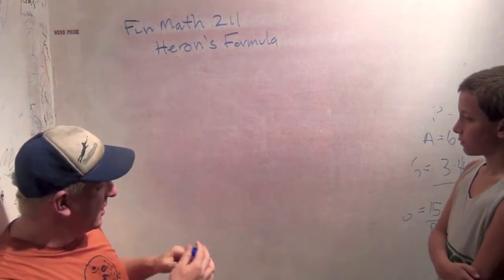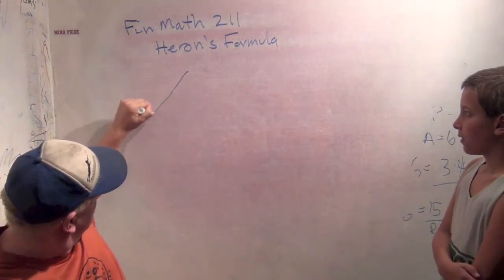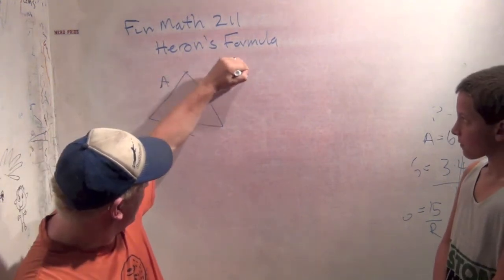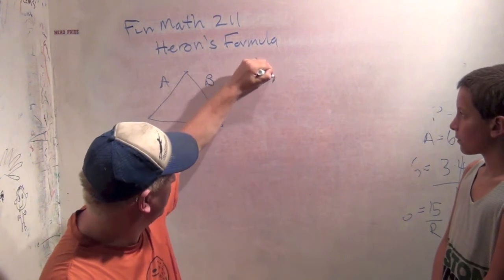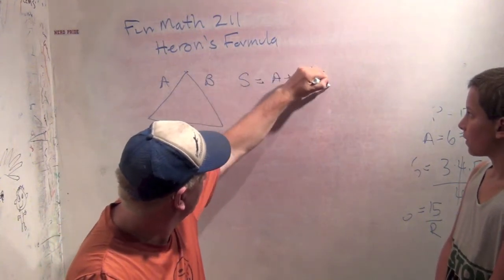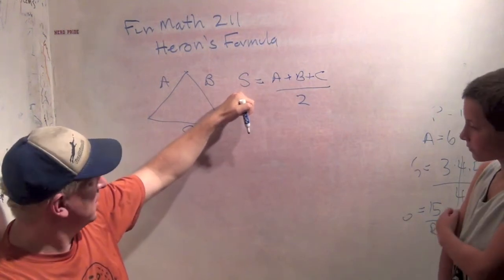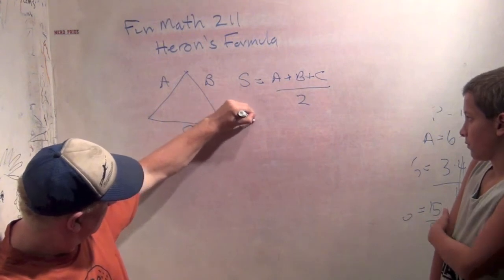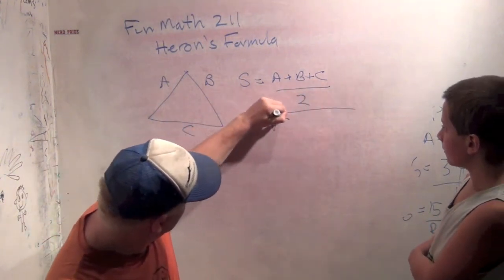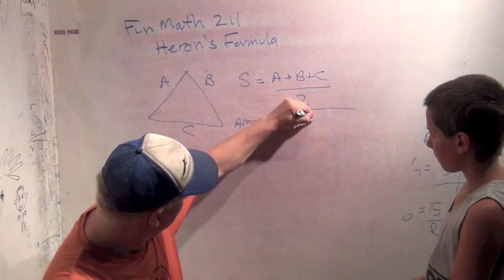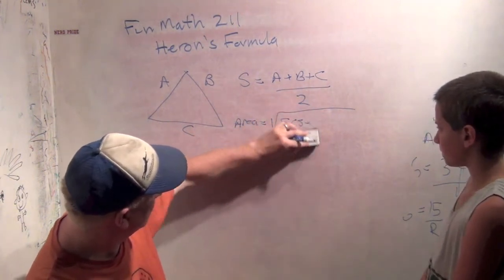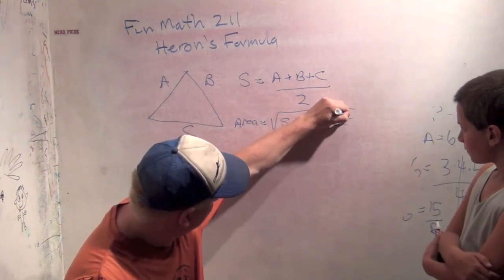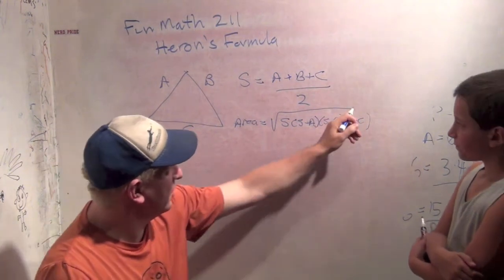So if you have a triangle, the sides are A, B, C, and we let S equal half the perimeter: A plus B plus C divided by 2. Heron's formula says the area is the square root of S times S minus A times S minus B times S minus C. So it's a really neat formula, the square root of this whole thing.